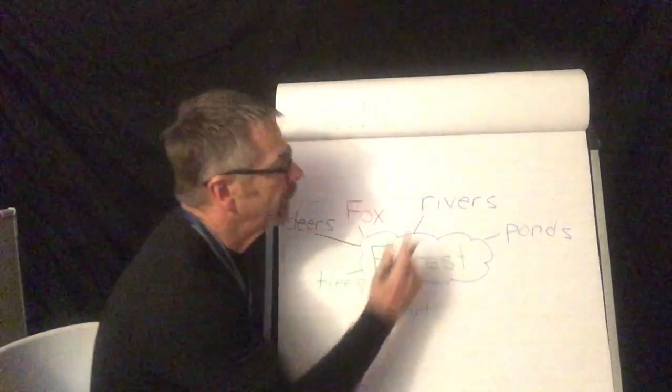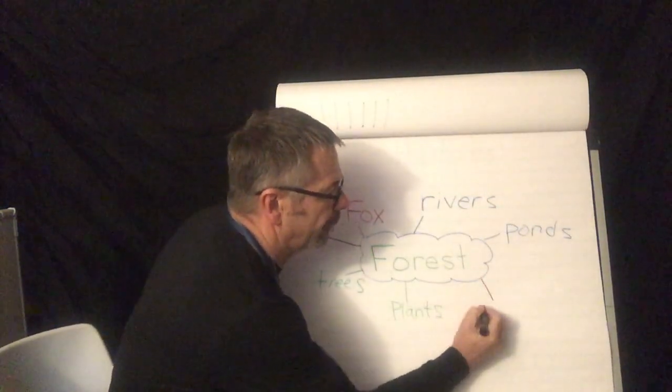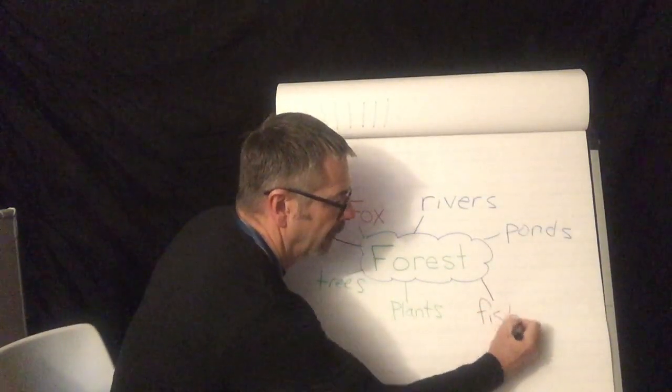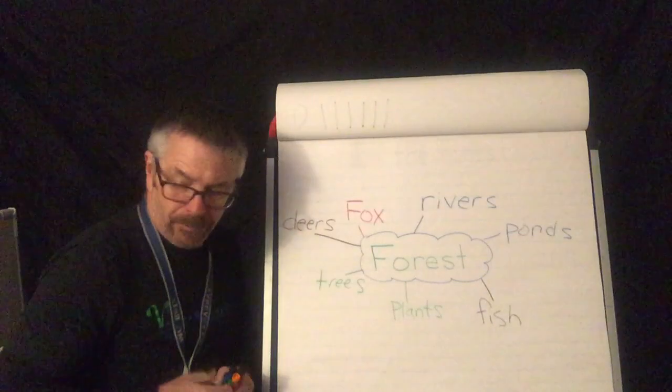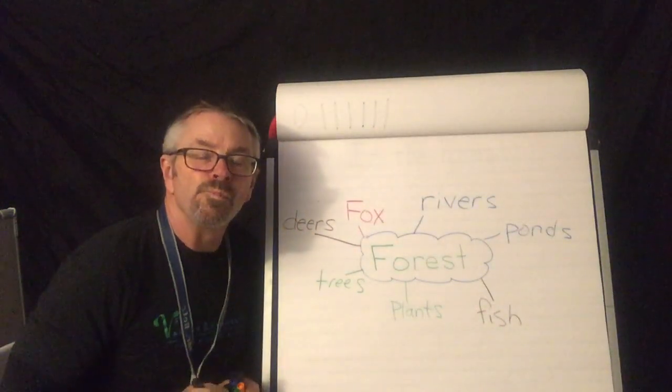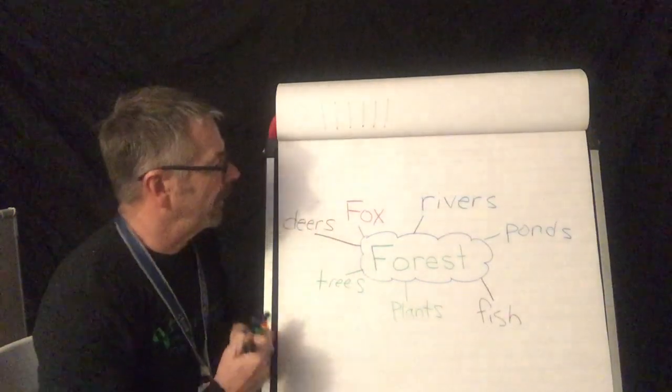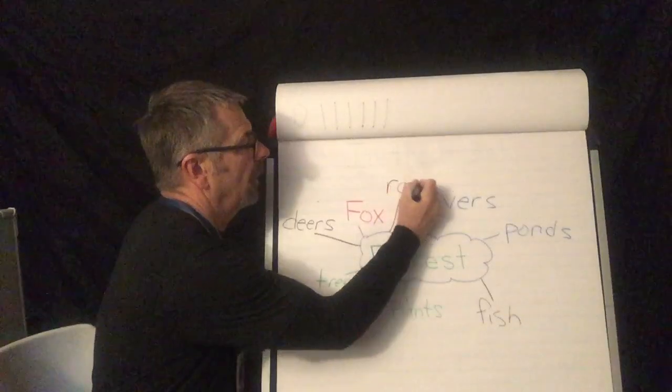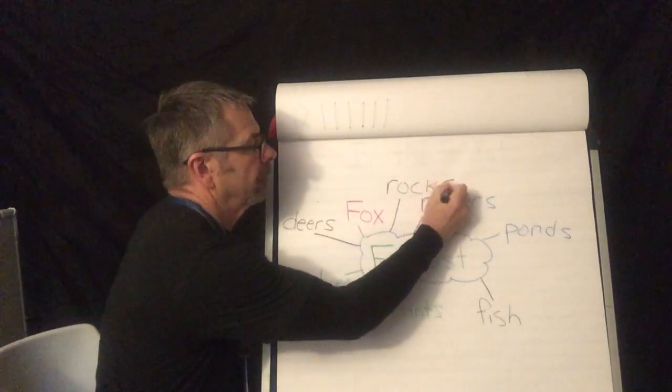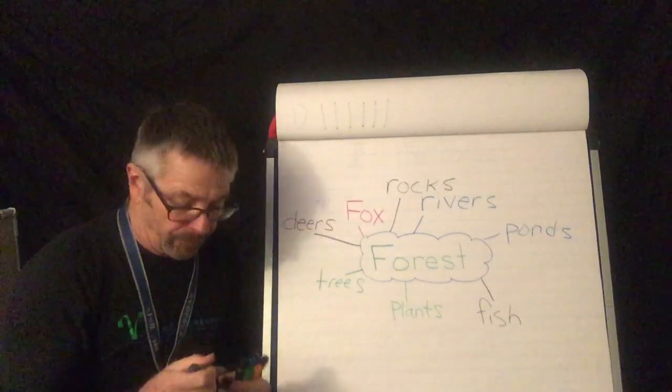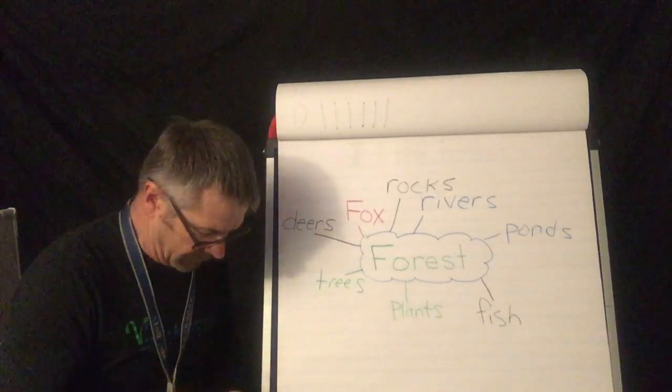Fish. Yeah. If there's rivers, there's probably going to be fish in the rivers. What else? What else is in the forest? Rocks. Rocks. Yes. Rocks. Lots of rocks in the forest. Let's keep going. What else do you know? What else is in there?